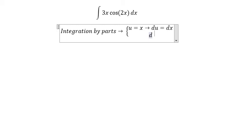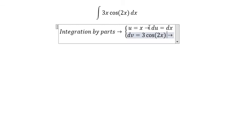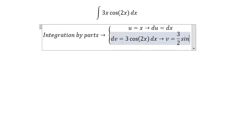dv we got about 3 cos 2x. So in this situation we got about v equal to 3 over 2 sin 2x.